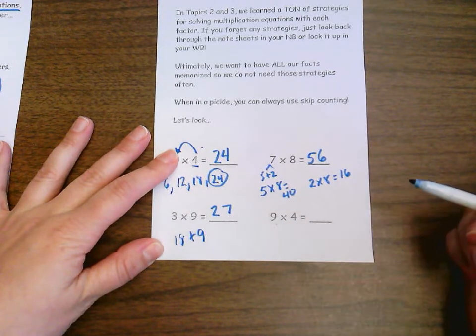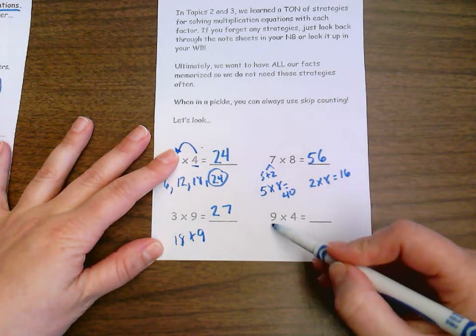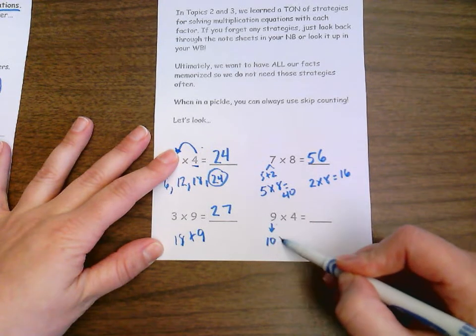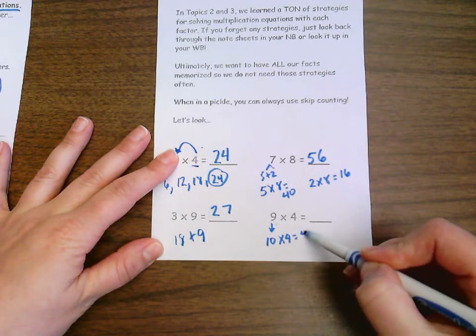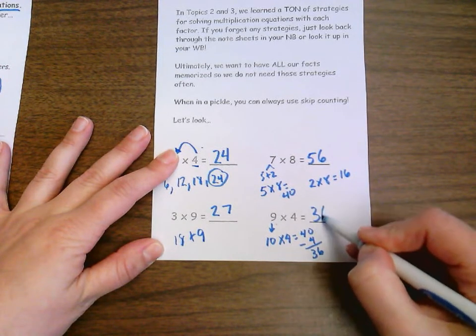And here, nine times four. I've already used the four tricks. So this time, I want to use the nines trick. I'm going to think of the nine as a ten and do ten times four equals 40 and then subtract four and that will give me 36.